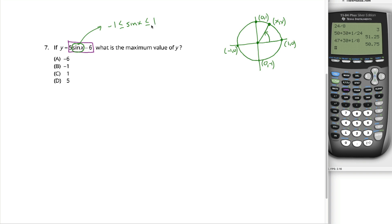The largest sine can ever be is positive 1, so the maximum y will ever be will be 5 times that positive 1 minus 6. In other words, 5 minus 6. In other words, negative 1.